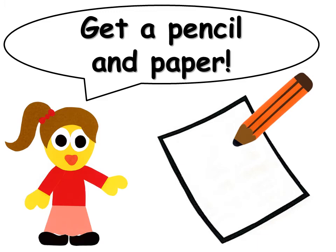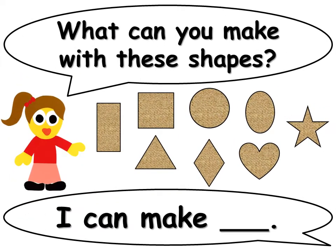Now you can get a pencil and paper. What can you make with these shapes? You have a rectangle, a square, a triangle, a circle, an oval, a star, a diamond, and a heart. What can you make? And you can try telling me, "I can make a [blank, blank, blank]." So have fun drawing with these shapes.